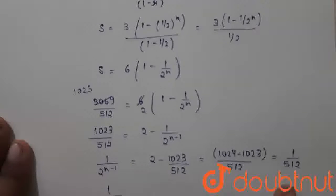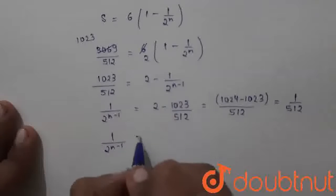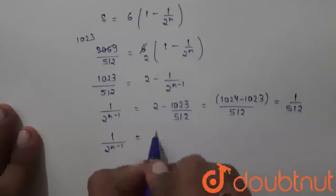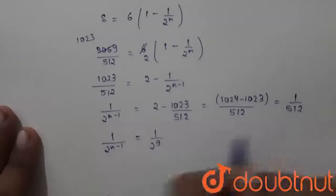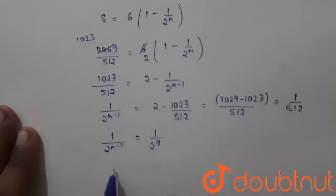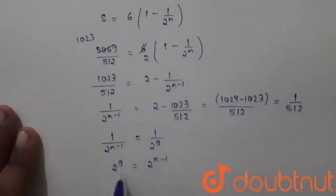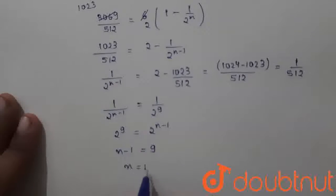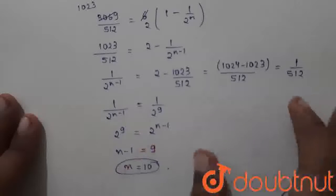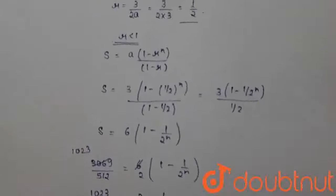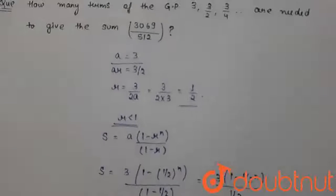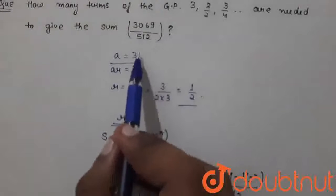So 1/2^(n-1) equals 1/512. Now 512 is 2 to the power 9. So we will cross-multiply and get 2^9 equals 2^(n-1). On comparing, since the base is the same, the exponents will also be the same. So n minus 1 equals 9, and n equals 10. So we need 10 terms for the given GP — 3, 3/2, and 3/4 — so that the sum will come as 3069 upon 512.